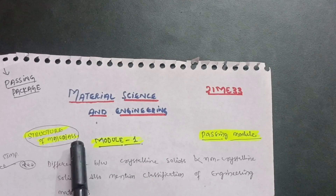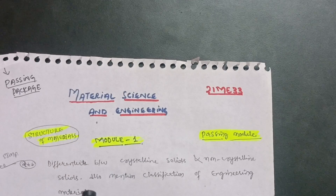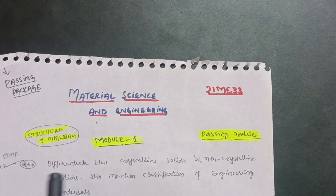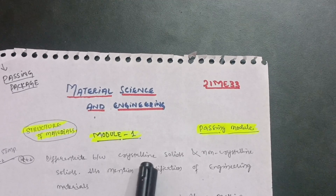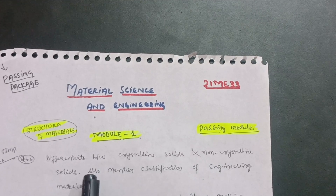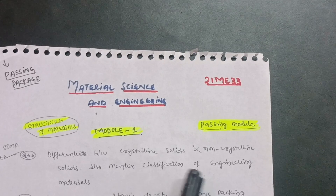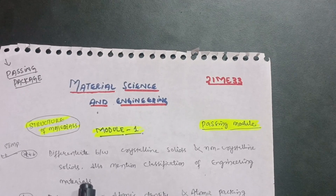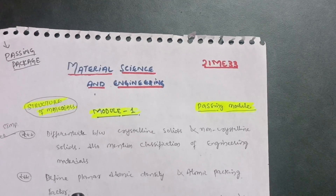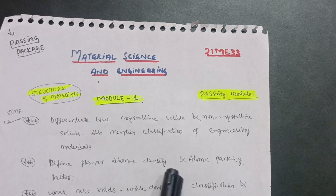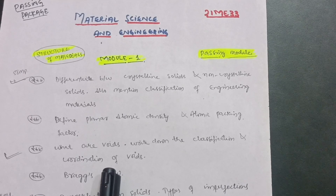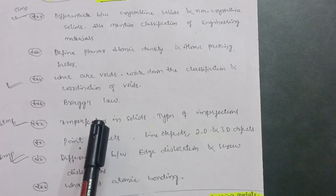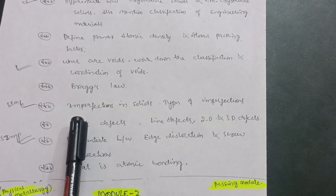The first super important question is: differentiate between crystalline solids and non-crystalline solids, and also mention the classification of engineering materials. Next, define planar atomic density and atomic packing factor. Then, what are voids? Write down the classification and coordination of voids. Also, Bragg's law — you have to focus on perfection and imperfections in solids and types of imperfections.